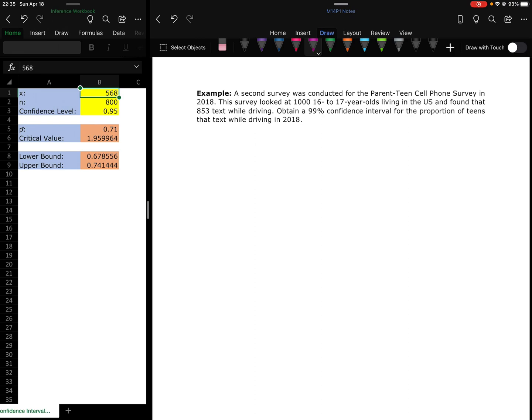Now we're going to do a 99% confidence interval for the proportion of teens that are texting and driving in 2018. So let's look at what I've got. A thousand sixteen to seventeen year olds and 853 are texting and driving. 99% confidence interval.